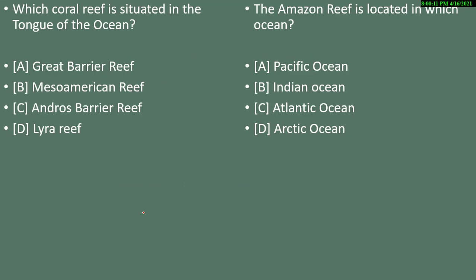Question 19: which coral reef is situated in the tongue of the ocean? Options are Great Barrier Reef, Meso American Reef, Andros Barrier Reef, or Lyra Reef. The correct answer is Andros Barrier Reef, option C.